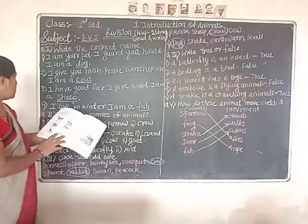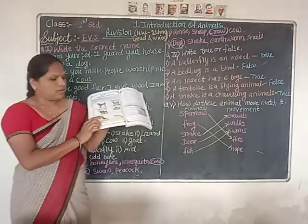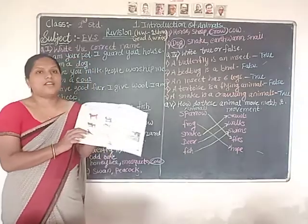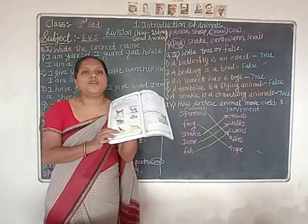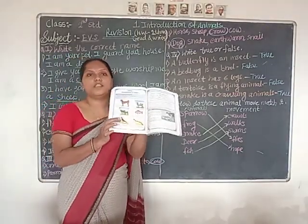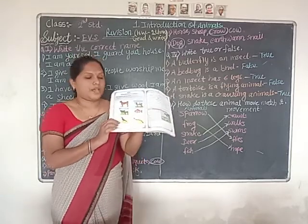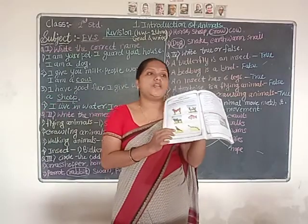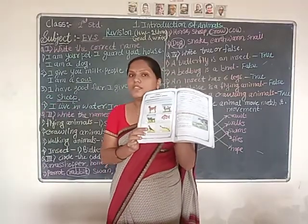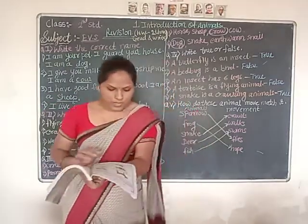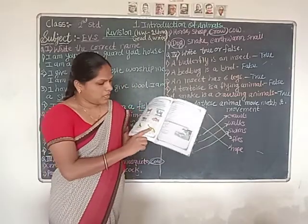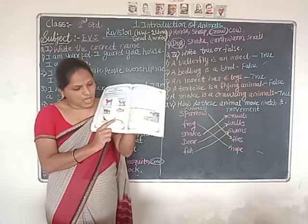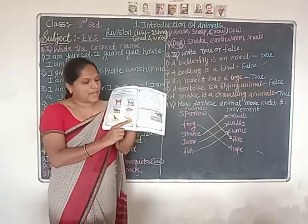Next one — another bird is given, and that is a crow. The crow is saying: 'I am black in color and I live near your house.' Which bird is this? This is a crow.